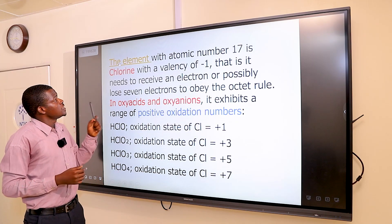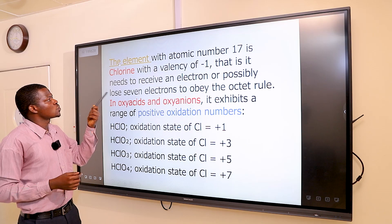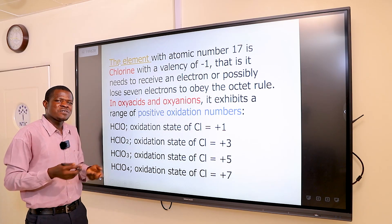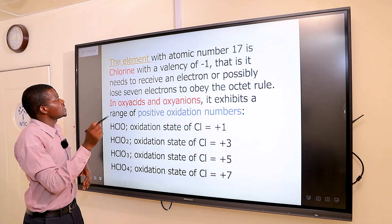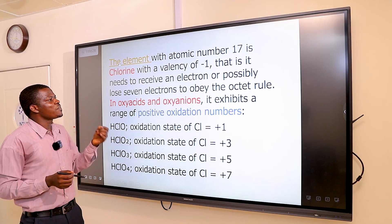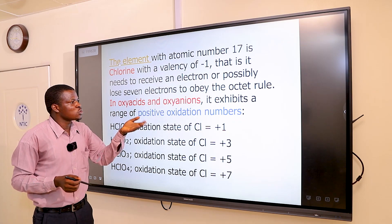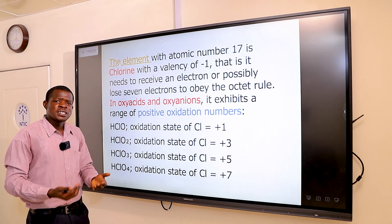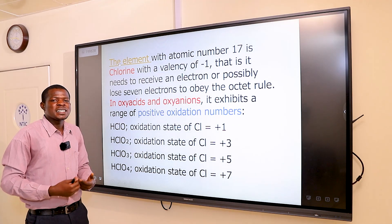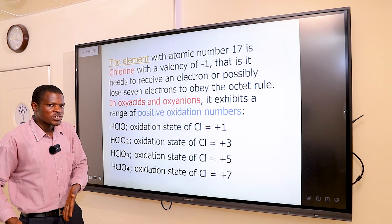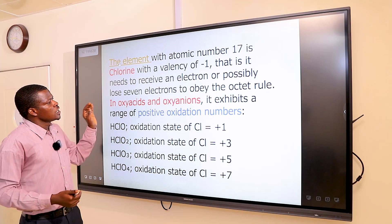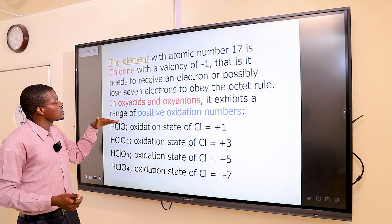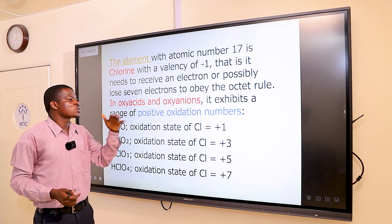Listen carefully. The element with atomic number 17 is chlorine, with a valency of minus one. It needs to receive an electron or possibly lose seven electrons to obey the octet rule. In chemistry, when an atom receives an electron, it becomes negatively charged. In oxyacids and oxyanions, chlorine exhibits a range of positive oxidation numbers.